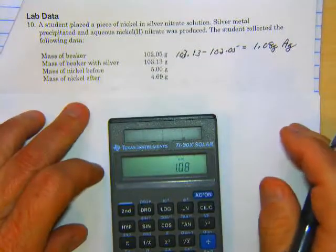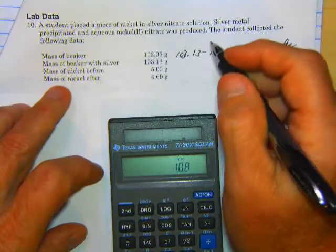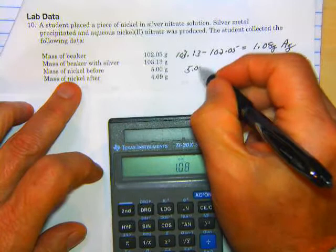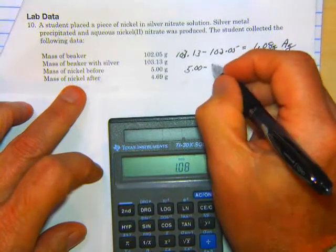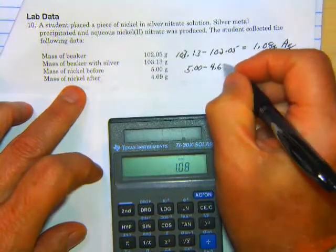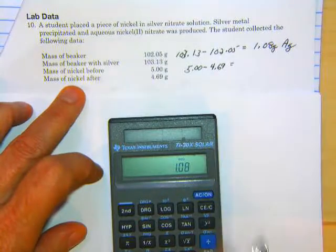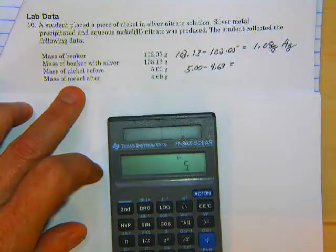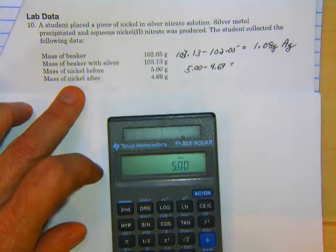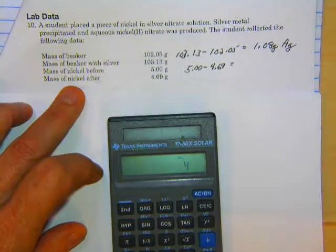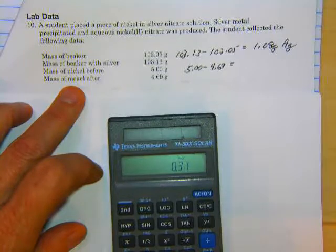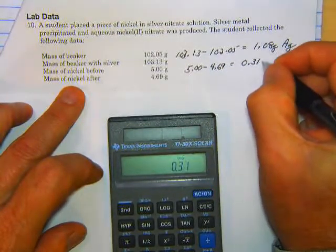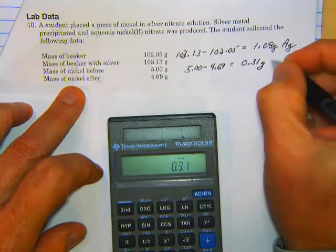Let's do the nickel while we're here. So the mass of nickel before was 5.00 and after is 4.69. So we'll take the difference to see how much was actually used. 5.00 minus 4.69 equals 0.31 grams of nickel were used.